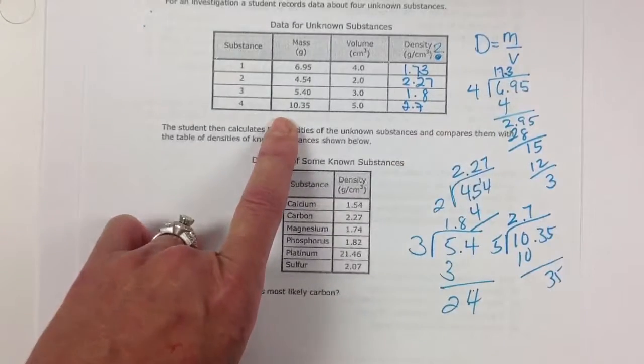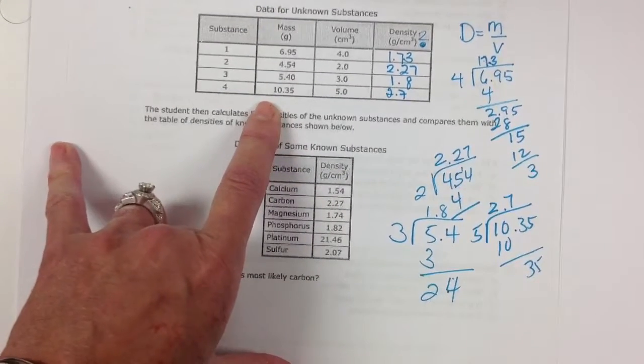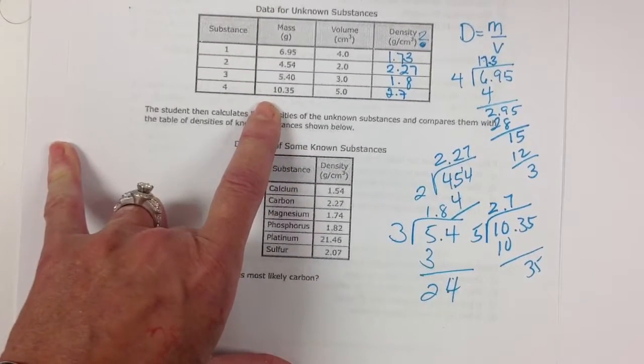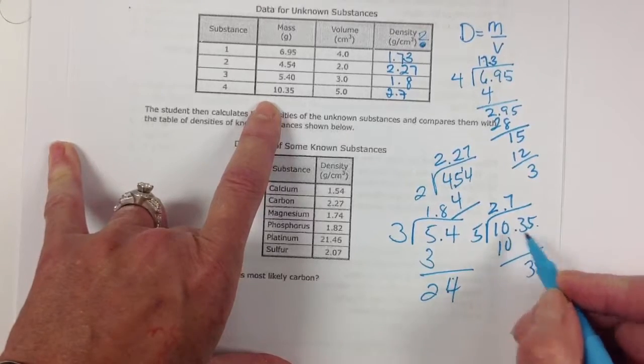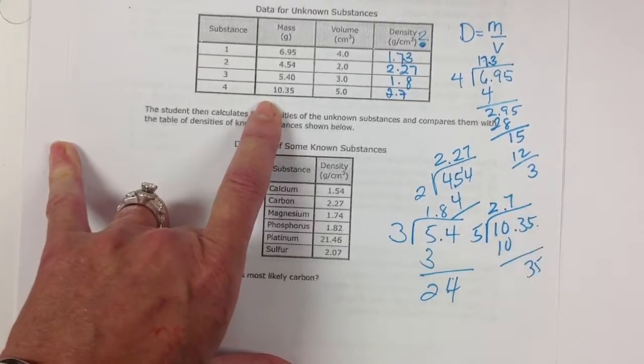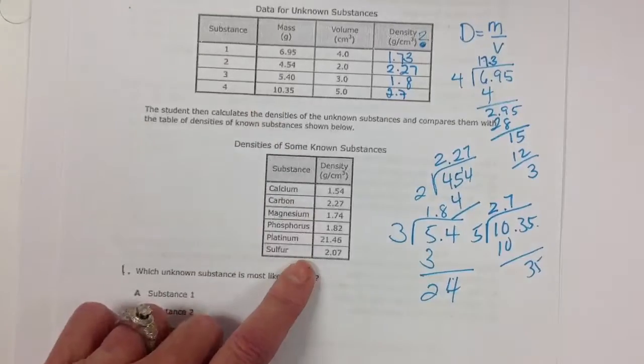And that's 7. So 2.7. Alright. Don't let the decimal throw you. Just divide and go back and count the number of spaces. You divide through and put your decimal.